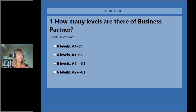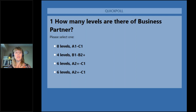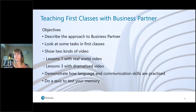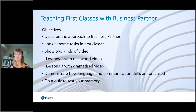The poll is now open. We'll have a few of these quiz type questions throughout the webinar — some more at the end. This quiz you could do together with your learners in the first classes or just for yourself to make sure you know where everything is in the course book. We've got the answers in now and I'm glad to say the majority picked the correct answer, which was A: eight levels, A1 to C1.